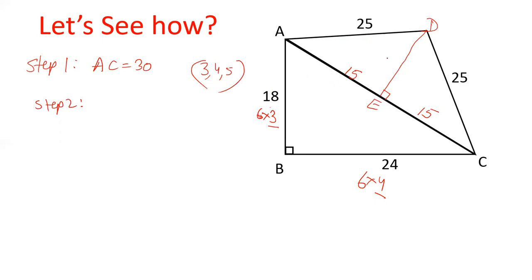So DE value we can remove. How can we calculate? Look, this is 5 times 5. And this is 5 times 3. Definitely, this is 5 times 4. If you use triplet 345, and this is what we call DE value is 20. 5 times 4, triplet multiply 5.